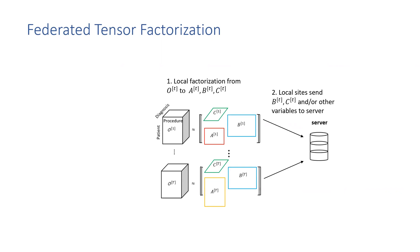Then the local sites send the feature factors B and C or the corresponding gradients to a coordinating server. Note that the local sites keep the patient factor A private, as we're only trying to learn the global feature factors.